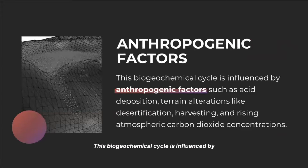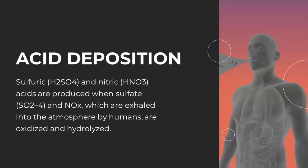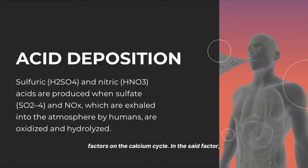This biogeochemical cycle is influenced by anthropogenic factors such as acid deposition, terrain alterations like desertification, harvesting, and rising atmospheric carbon dioxide concentrations. Let us talk about a particular anthropogenic factor, specifically acid deposition, to better comprehend the impacts of anthropogenic factors on the calcium cycle.